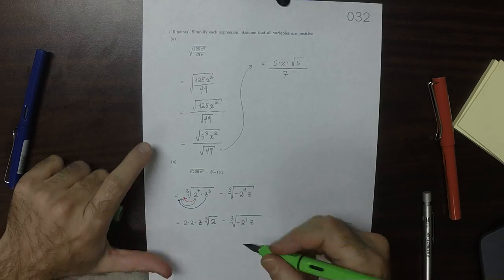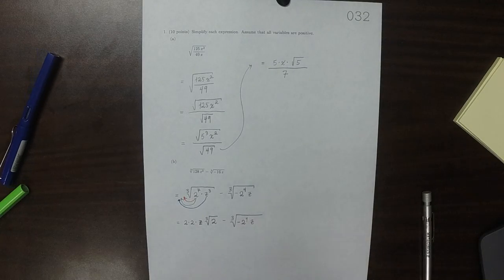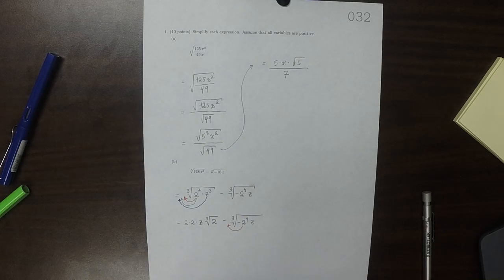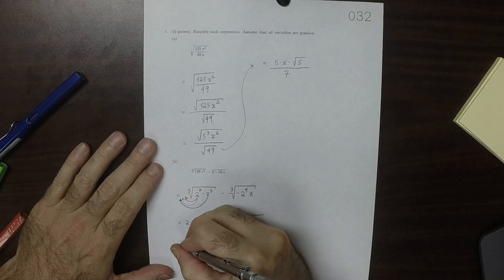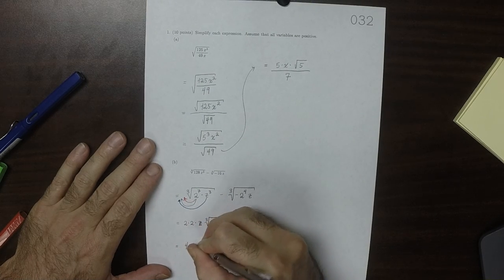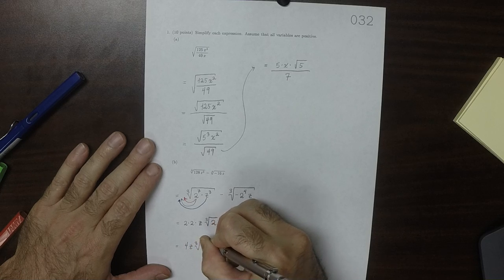We can take out three of those 2's. So this would be 4 z cube root 2.